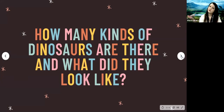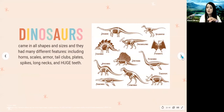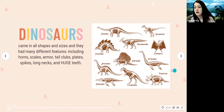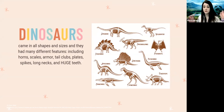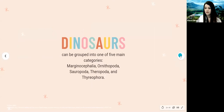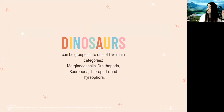So how many different kinds of dinosaurs are there and what did they look like? Well, dinosaurs came in all different shapes and sizes. They had many different features including horns, scales, armor, tail clubs, plates, spikes, long necks, and huge teeth. Dinosaurs can be grouped into five main categories: Marginocephalia, Ornithopoda, Sauropoda, Theropoda, and Thyreophora.